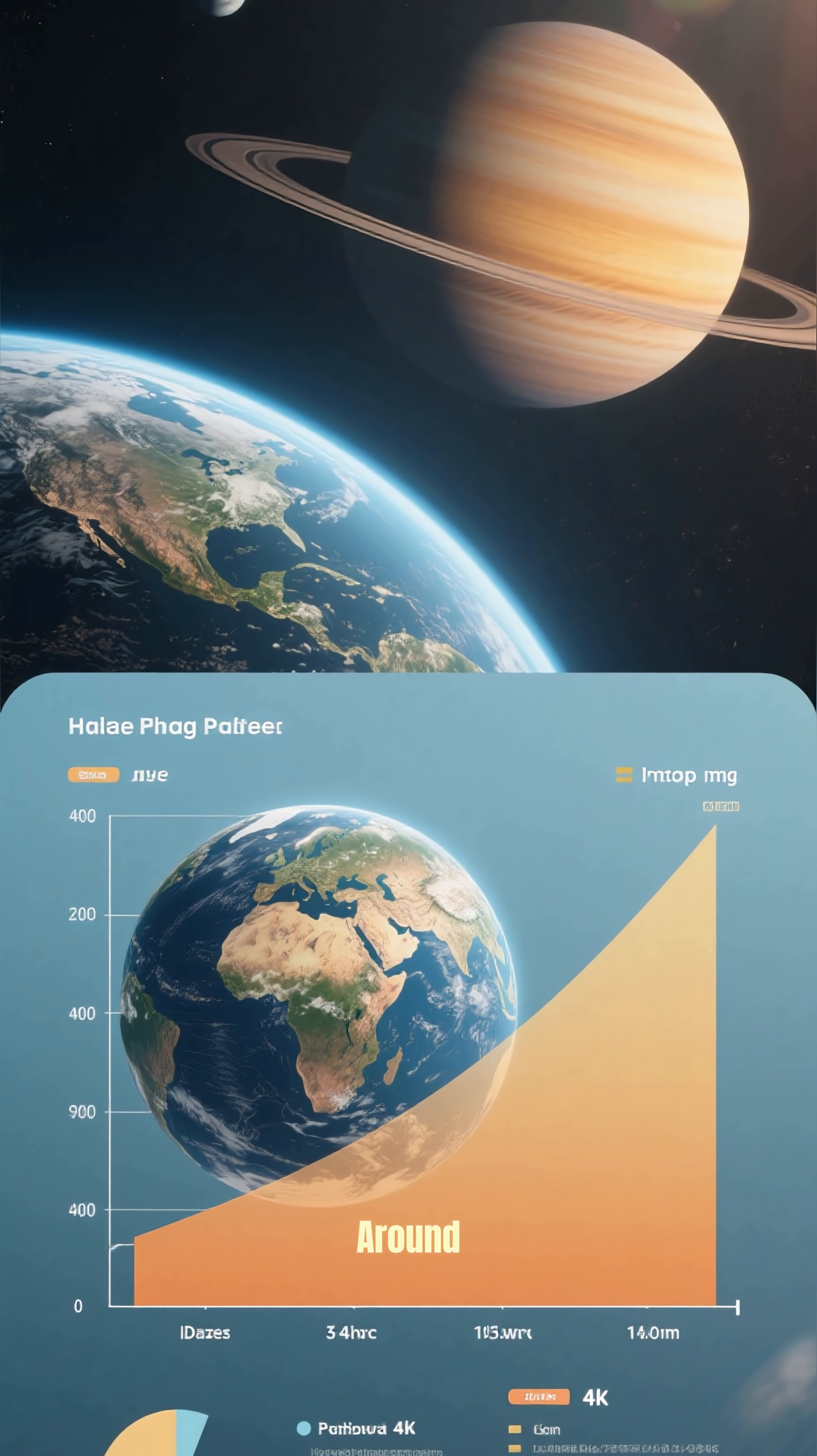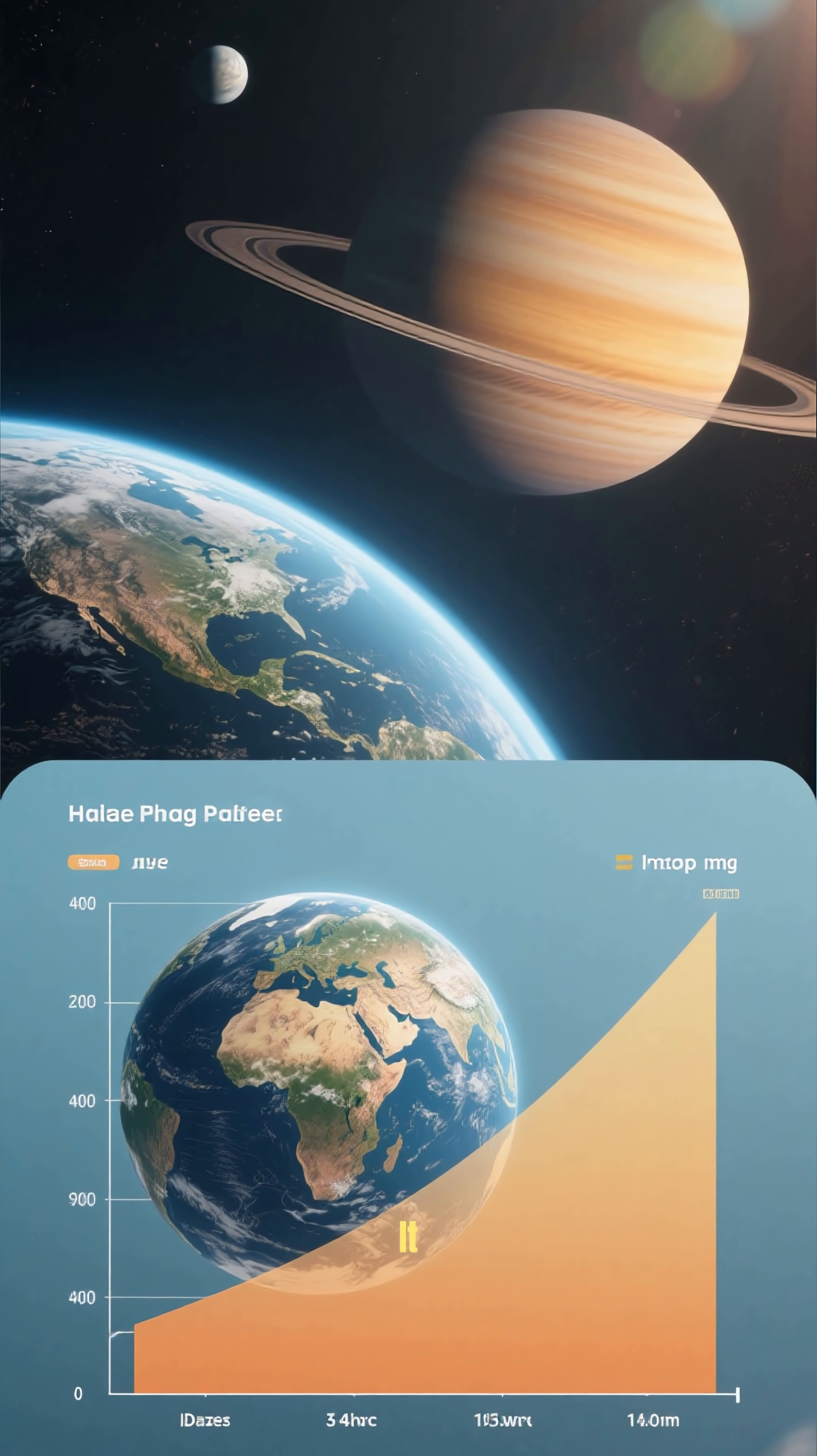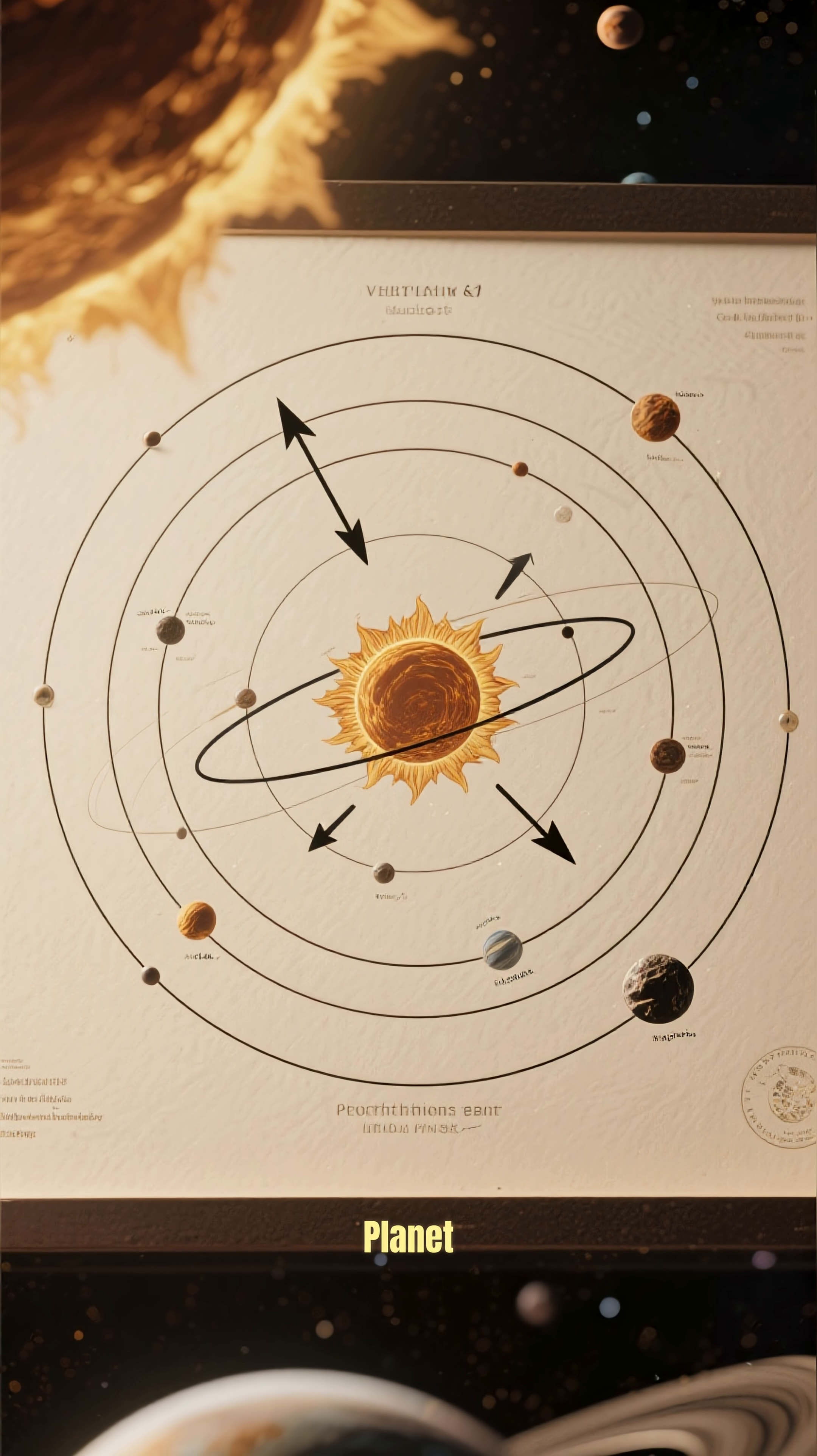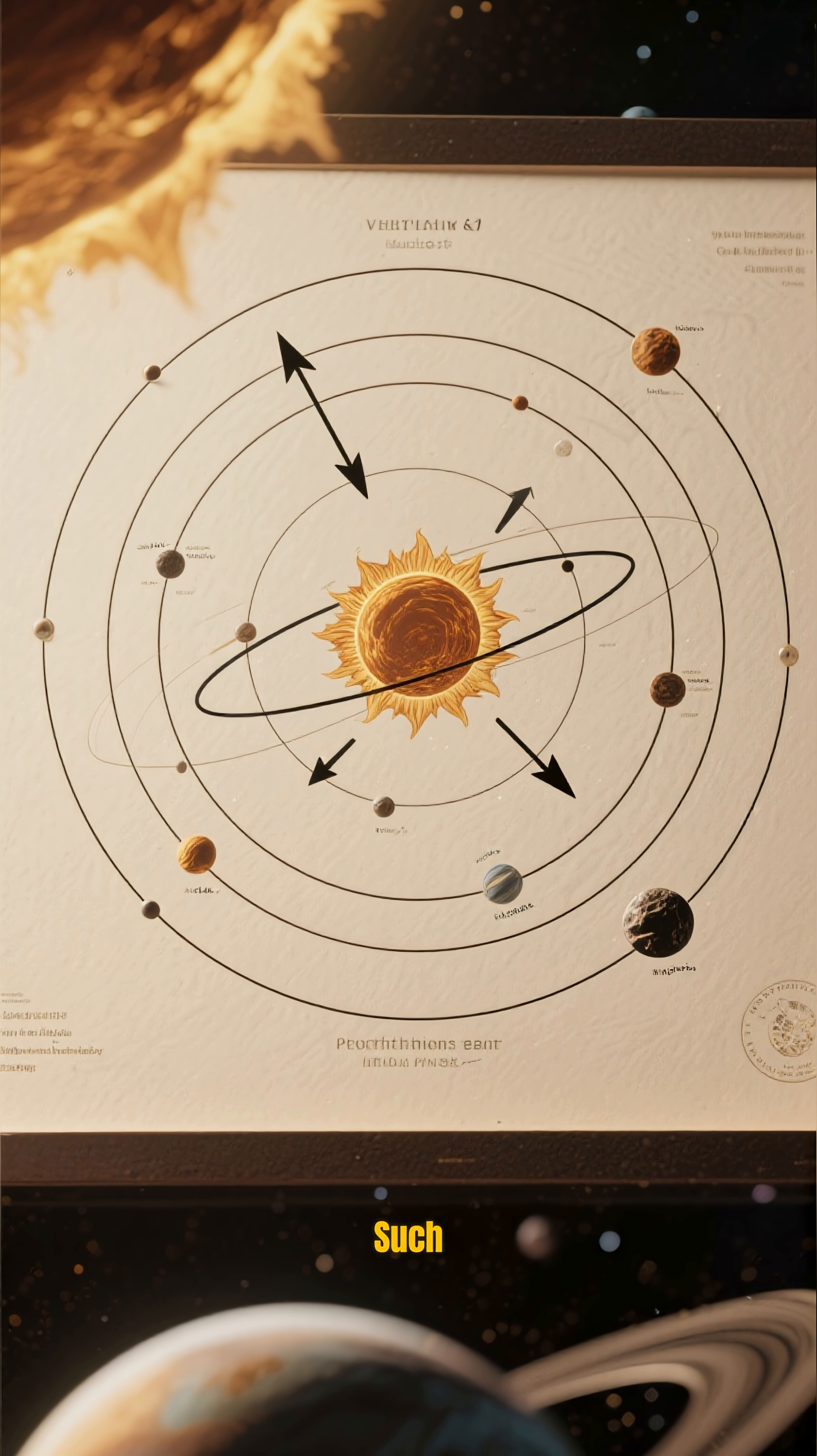It would have to be around 5 to 10 times the mass of Earth, but we've never seen it. It's possible that this planet's gravity is what is causing these distant objects to have such strange orbits.